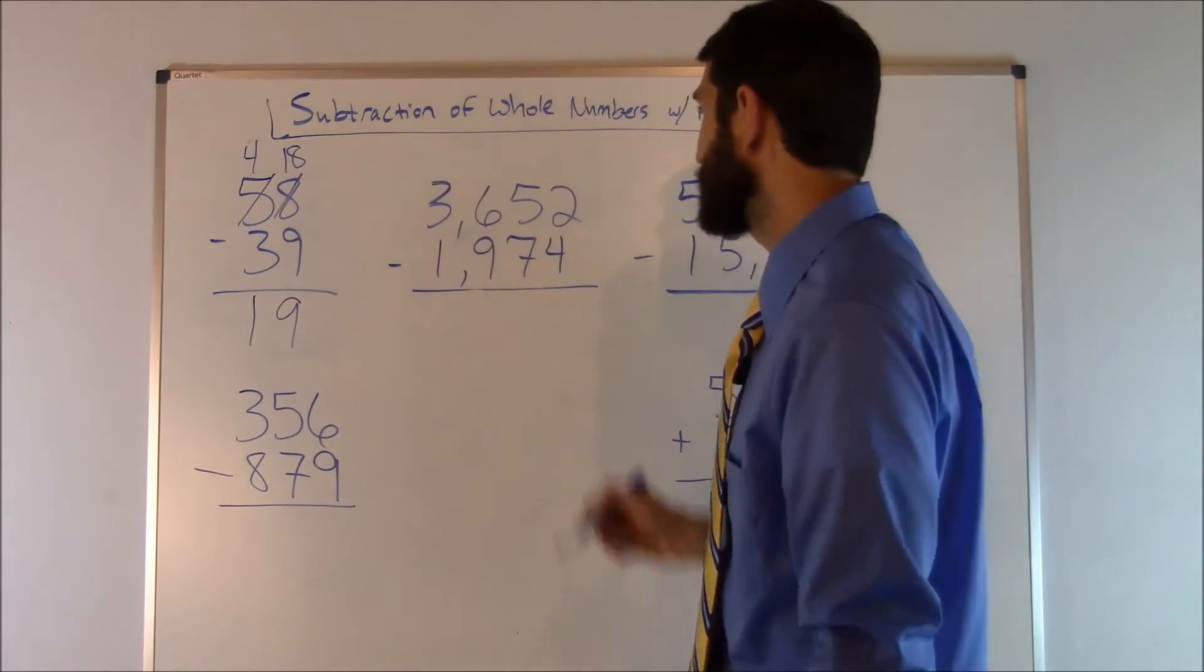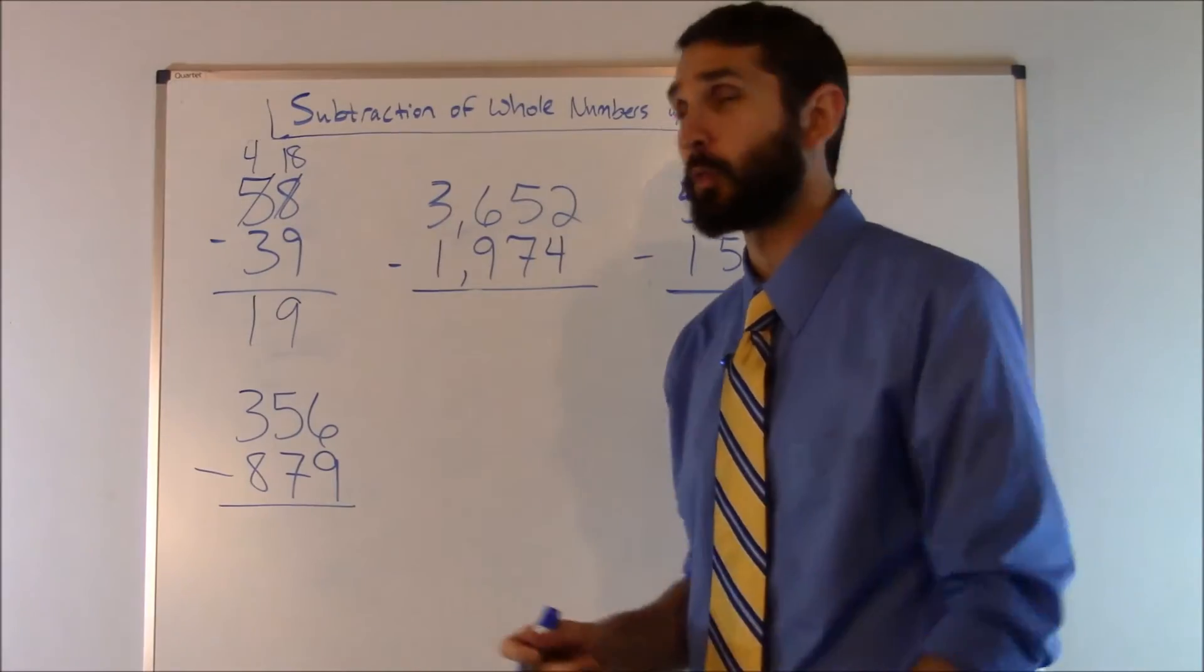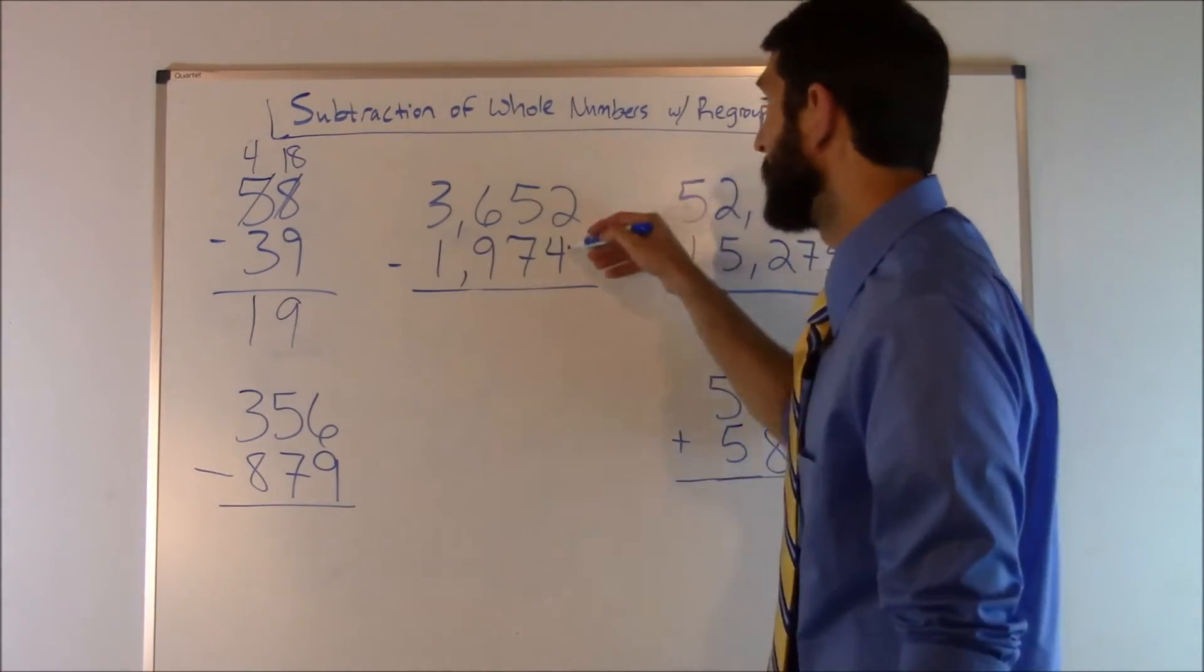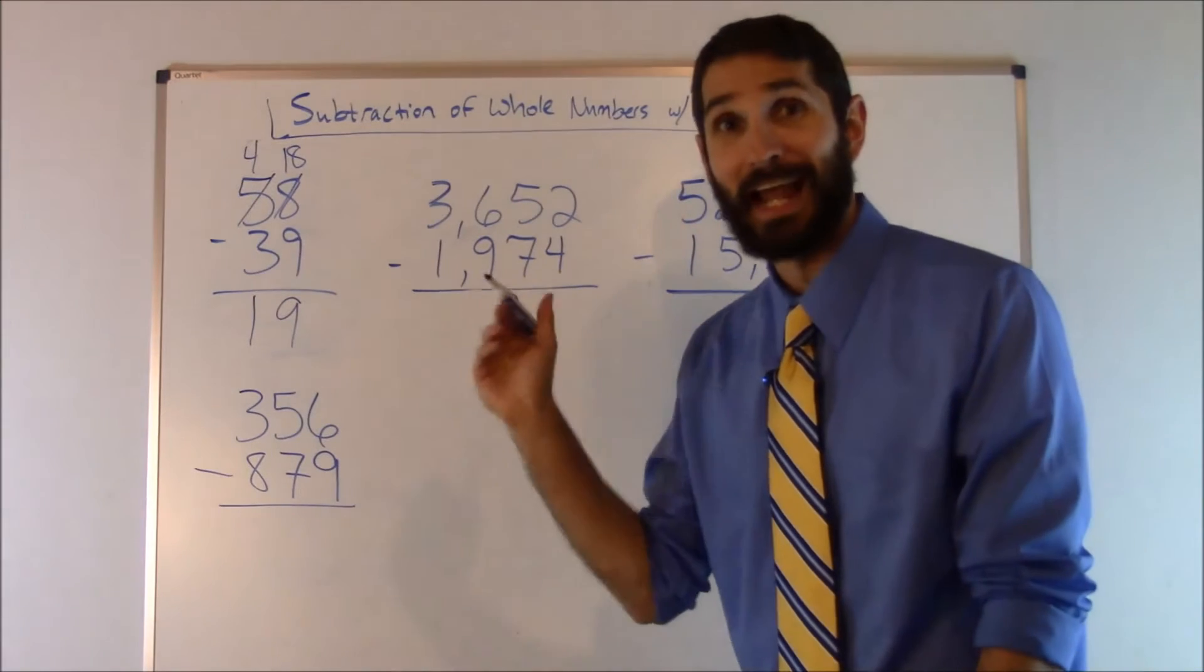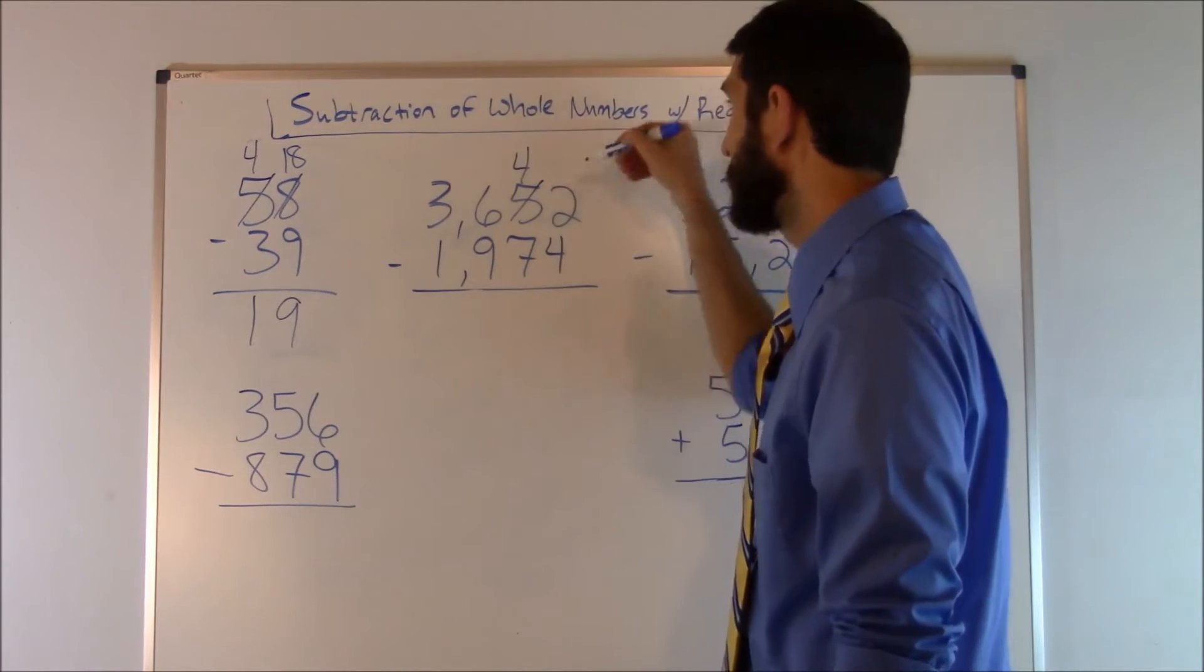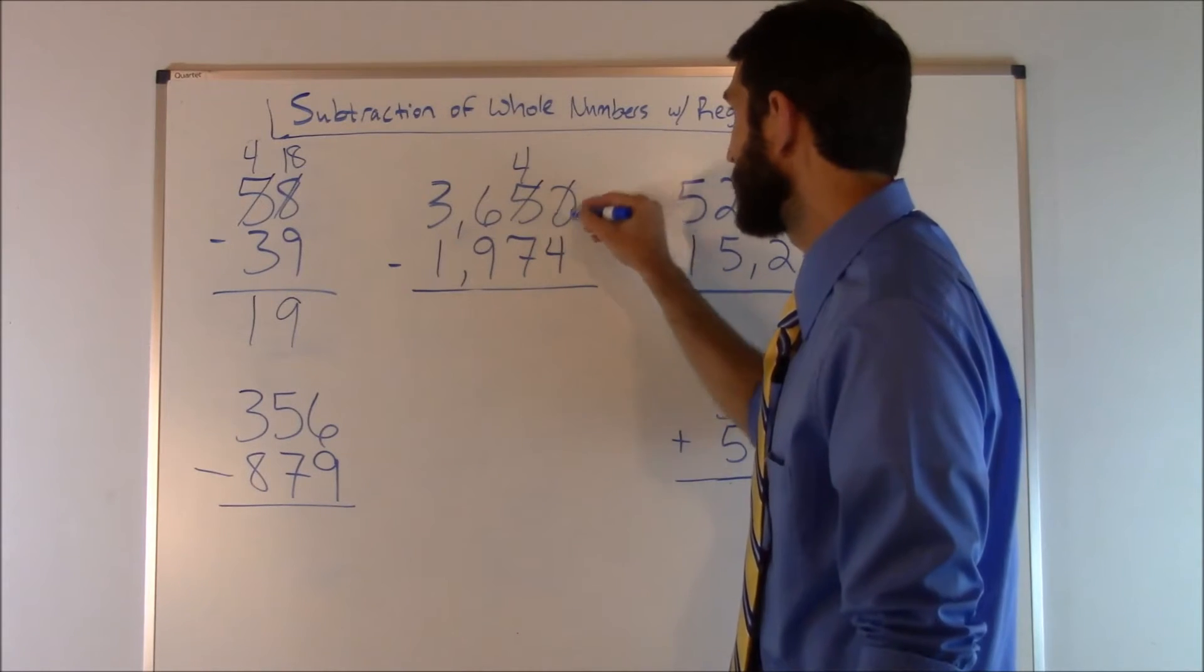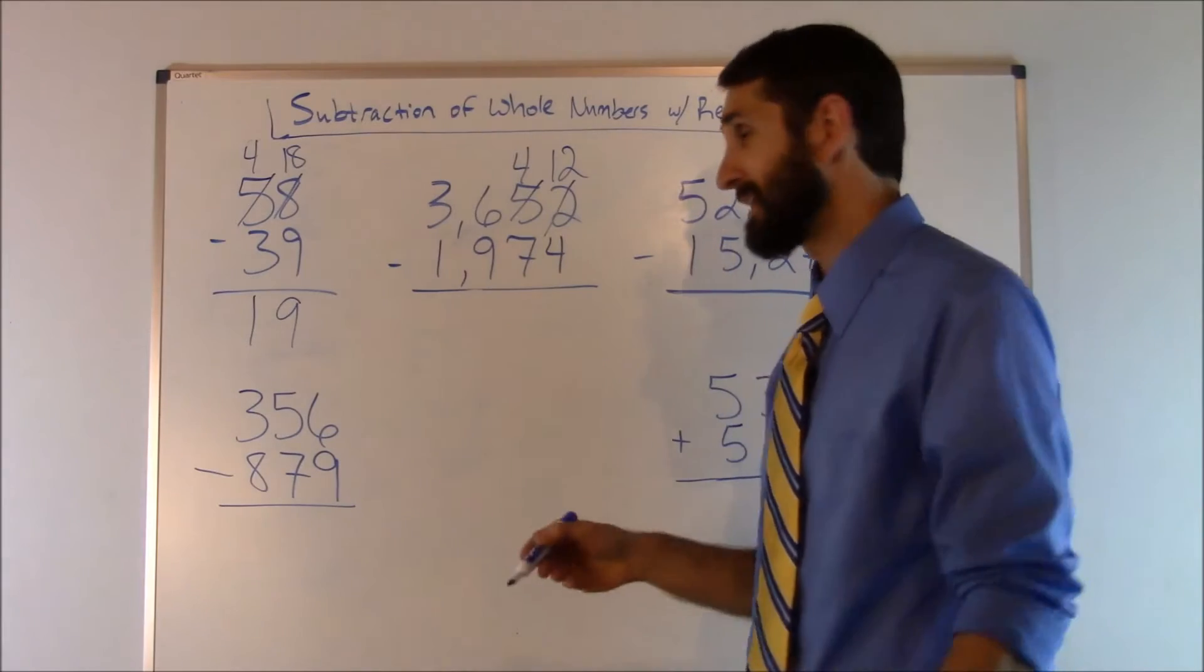Let's do another one: 3,652 minus 1,974. Again we start on the right-hand side of the column. Two minus four, we can't do that. So we got to borrow one from the neighbor, add ten back. So five minus one is going to give us a four, and then we add ten to this one. That's going to give us twelve. Ten plus two is twelve. So twelve minus four is going to give us eight.